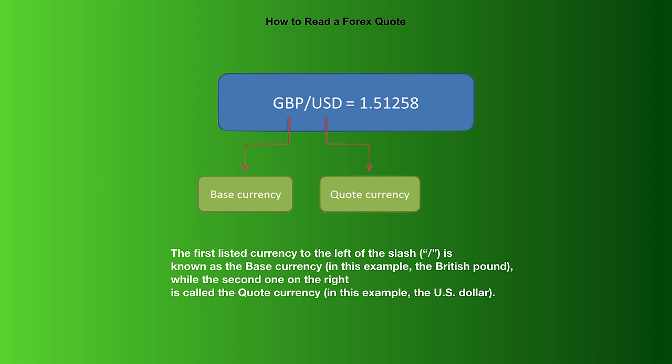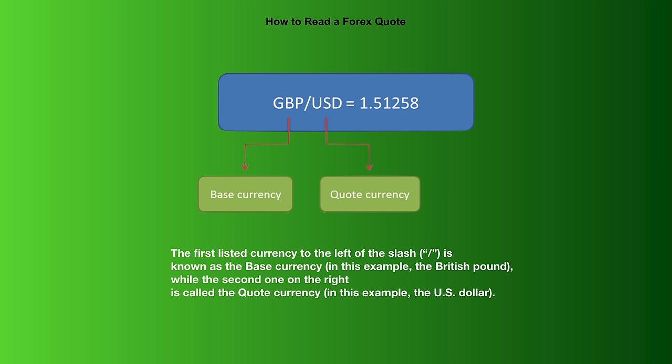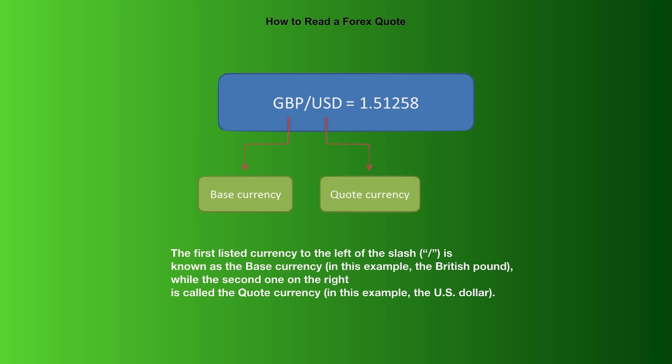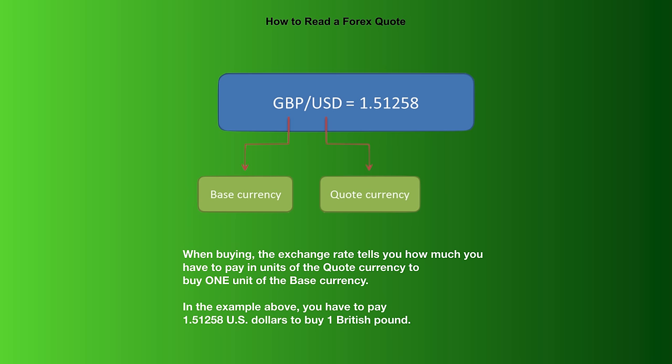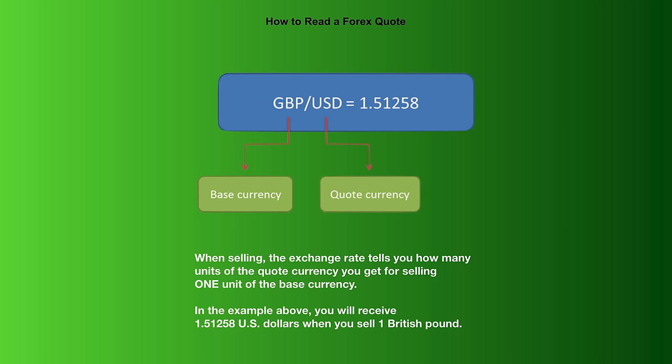Here's an example of a foreign exchange rate for the British pound versus the US dollar. The first listed currency to the left of the slash is the base currency — in this example, the British pound — whilst the second on the right is the quote currency, the US dollar. When buying, the exchange rate tells you how much you have to pay in units of the quote currency to buy one unit of the base currency. In the example above, you have to pay 1.51258 US dollars to buy one British pound. When selling, you will receive 1.51258 US dollars when you sell one British pound.